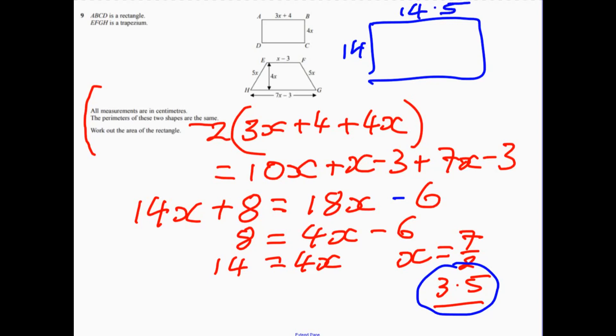To work out the area, just multiply these two together. And if you do that, it's 203. And it does say centimetres squared on the answer line.